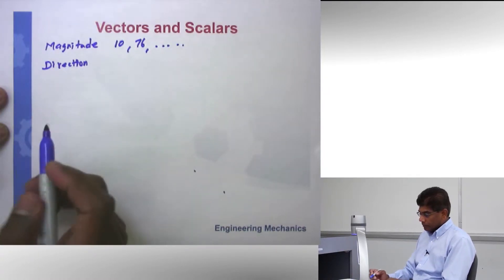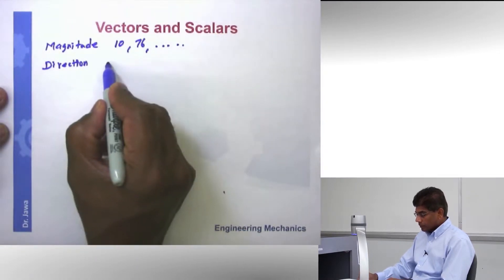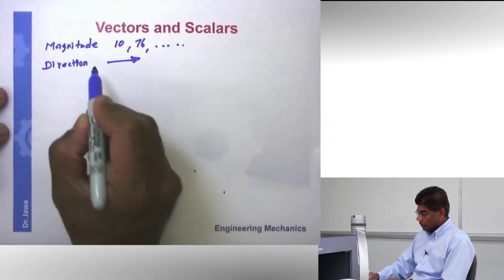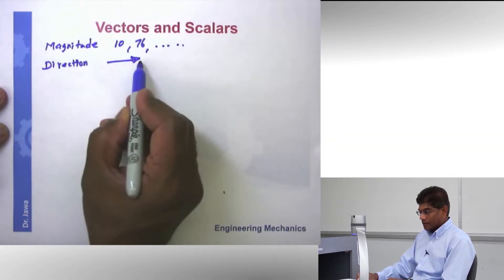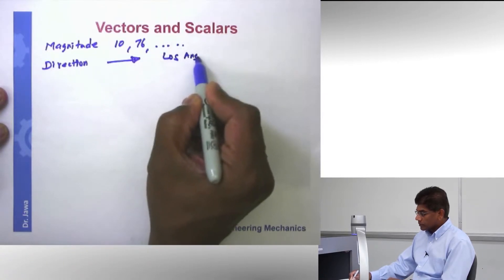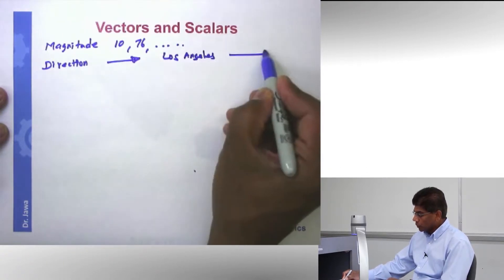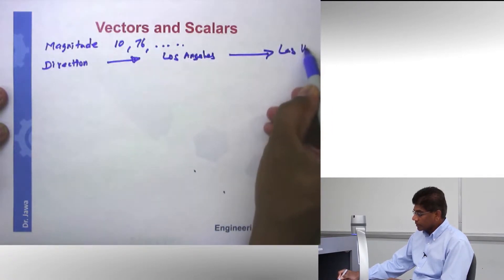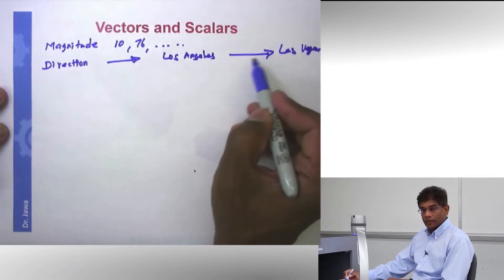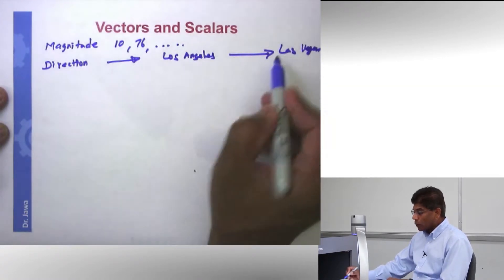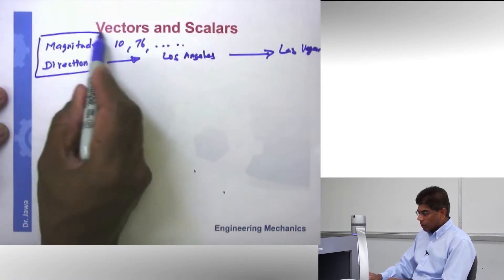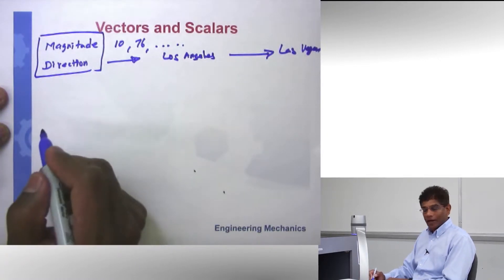A direction is, for example, going this way — in this case, going from east to west. I gave you an example of going from Los Angeles to Las Vegas. That would be going east at a certain speed, which is like 50 miles an hour. That would be a vector. So any physical or engineering quantity with magnitude and direction can be called a vector.